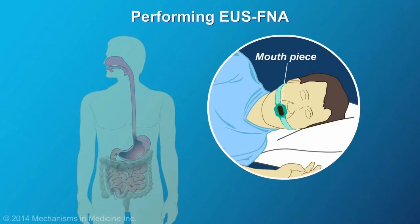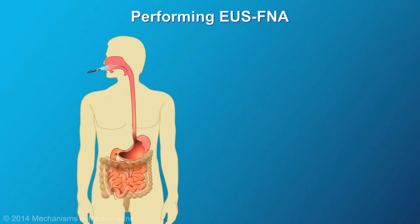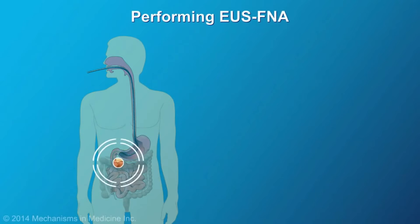A mouthpiece will be used to protect both your teeth and the echoendoscope. The echoendoscope is then inserted into the mouth, passed through the esophagus, the stomach, and into the duodenum.